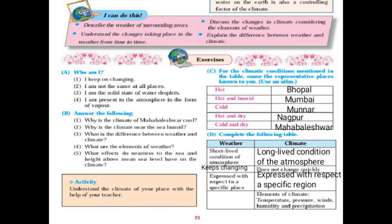Elements of weather are temperature, pressure, winds, humidity, and precipitation. Elements of climate are also temperature, pressure, winds, humidity, and precipitation.